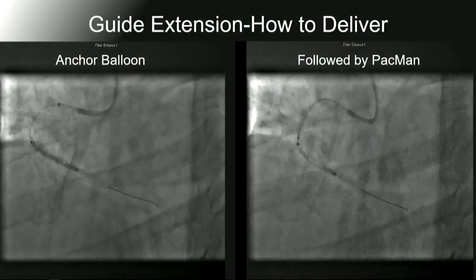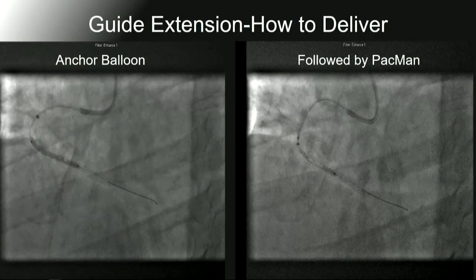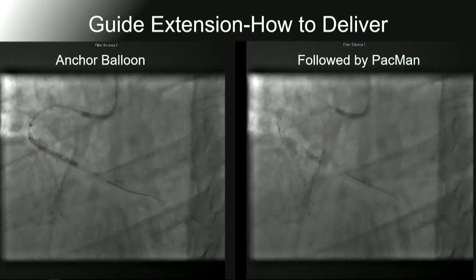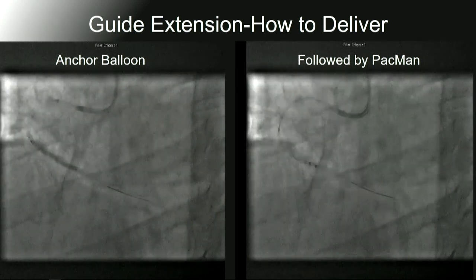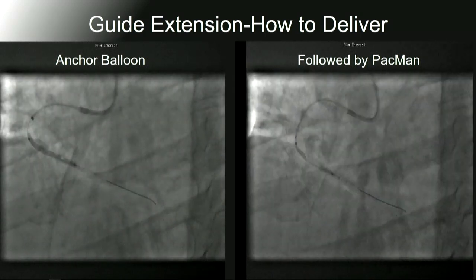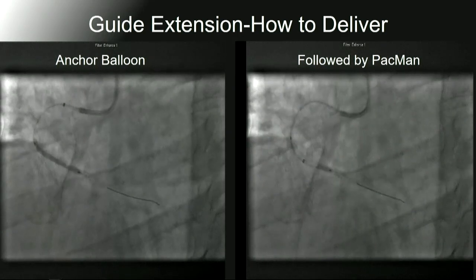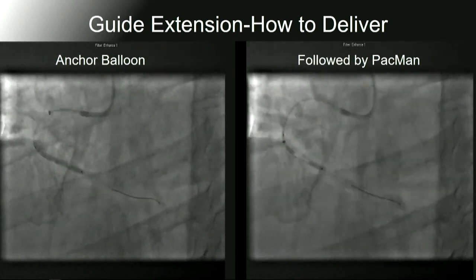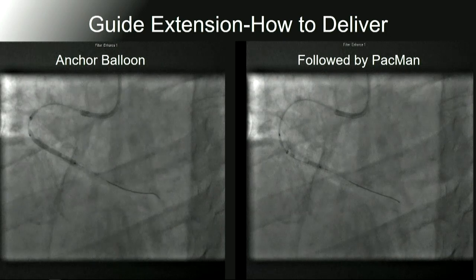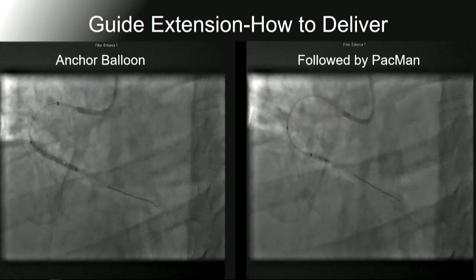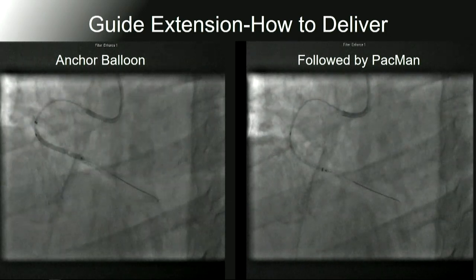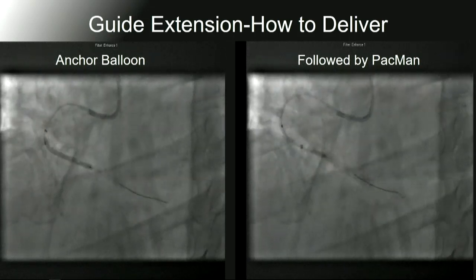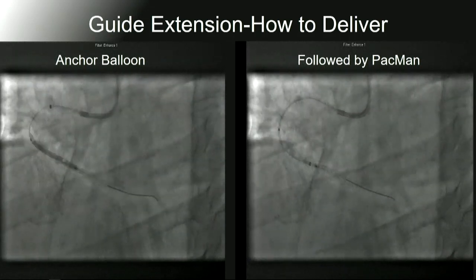This is another example with a right coronary artery where we already placed a stent distally. We're now using the stent balloon as an anchor to advance the GuideLiner down the vessel to place the next stent. This is the anchor balloon technique. As you get closer to the balloon, deflate it slowly — don't go fully negative. Go slowly on the inflator to allow the balloon to collapse, and advance your GuideLiner as the balloon collapses.